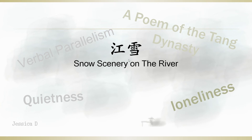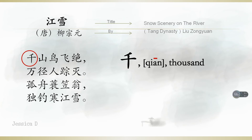江雪, snow scenery on the river. Let's look at the first character, 千, thousand.